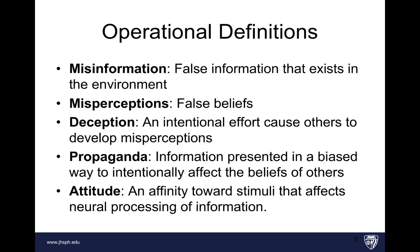So let's start with some terms. I want to introduce five terms. The first term is misinformation, which I'm going to define as false information that exists in the environment. That's different than misperception, which is a false belief. A false belief could be derived from false information or true information. Deception is the intentional effort to cause others to develop misperceptions, kind of like lying, where you're trying to make people believe something that is not true. Propaganda is information presented in a biased way to intentionally affect the beliefs of others — propaganda could be true information but presented in a biased way.